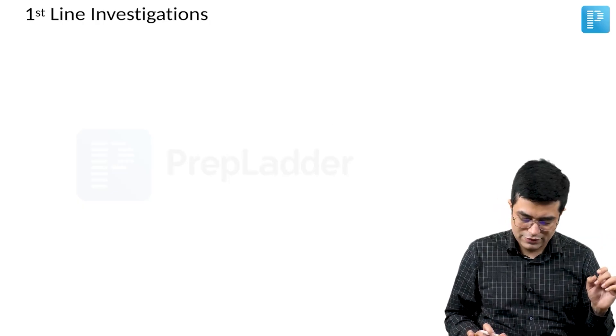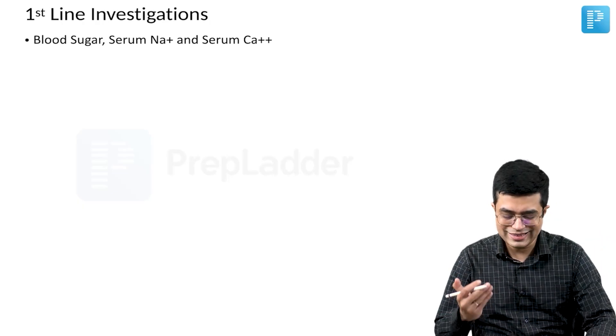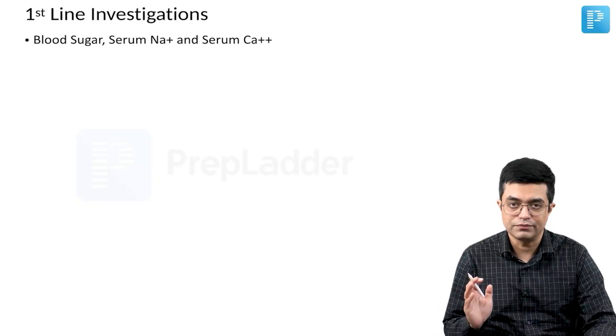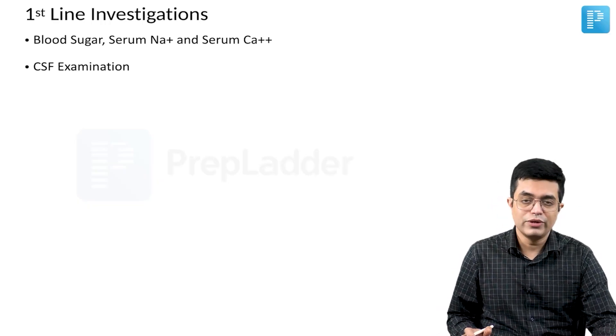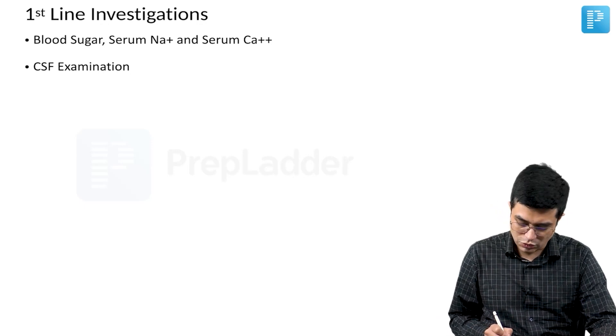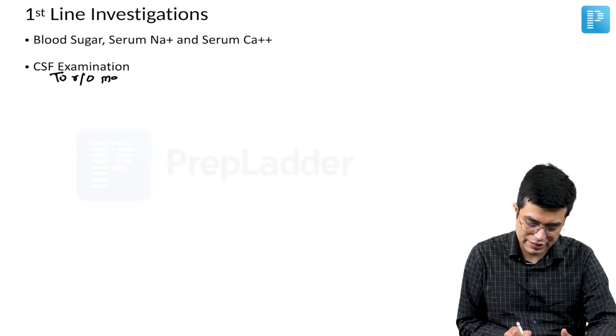Any seizure in a newborn, what investigations have to be done? These are the first line investigations. First is checking for blood sugar, serum sodium and serum calcium. You will go on for doing a CSF examination to rule out meningitis.